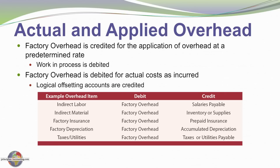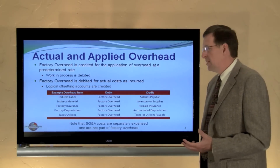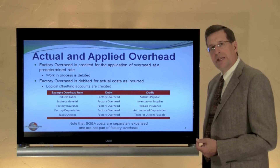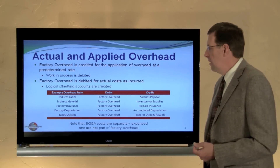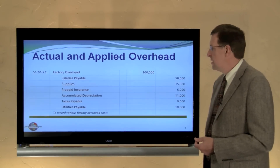In each case we're going to debit the overhead account for those costs. The credits will be essentially, eventually cash, but in the meantime salaries payable, supplies inventory, prepaid insurance, accumulated depreciation, or whatever. Importantly, selling, general, and administrative costs are not considered to be part of manufacturing overhead — they are expensed separately as a period expense. We're only concerned with factory overhead items.